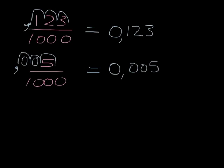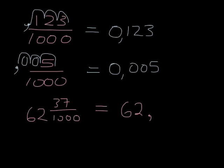If we have something like 62 and 37 thousandths, well, we know that we have the 62 before the comma. Now we've just got to figure out what we do after the comma. Well, 1, 2, 3 zeros, and so we know that we have to go 1, 2, 3 steps back before we put the comma, and we have to have a 0 in the space, so we know it will be 62.037.